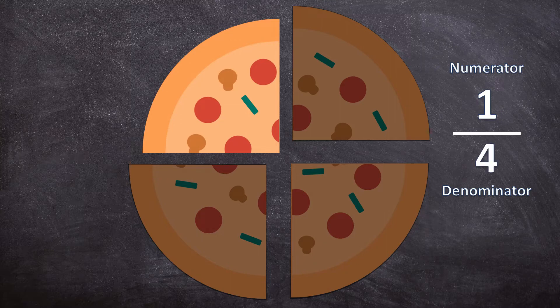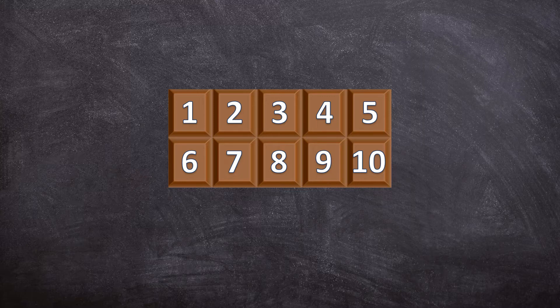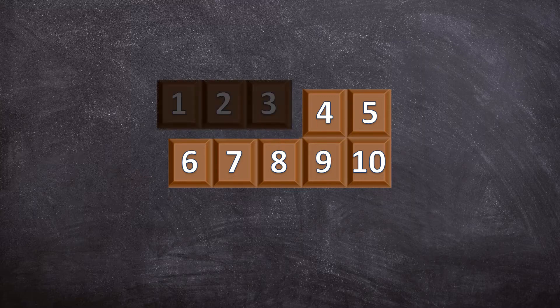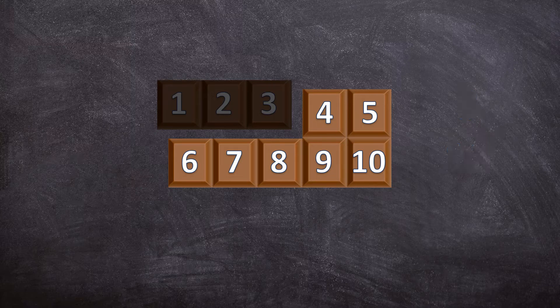Now let's have another example. Here we have a slab of chocolate with 10 equal pieces and I eat three of those pieces. My question is: what fraction of this chocolate did I eat? I ate three out of 10 equal pieces. But if I ask how many pieces of chocolate are left over, that is a different question — that will be seven pieces out of the 10 pieces.